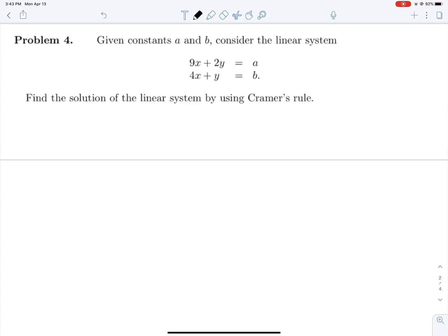And problem four, well it's actually problem three for us. Given constants A and B, consider this linear system and find the solution using Cramer's rule. So we can rewrite this in the form that we've seen above.